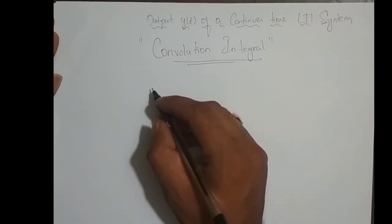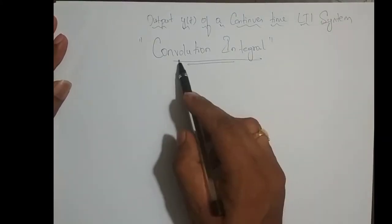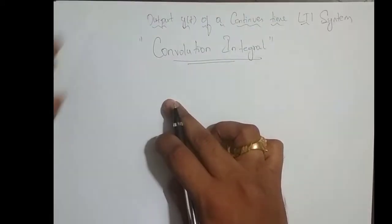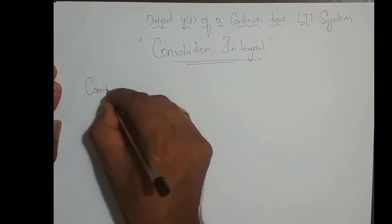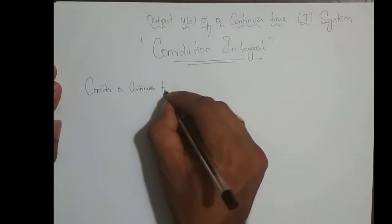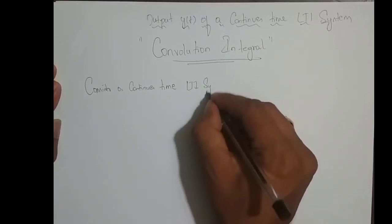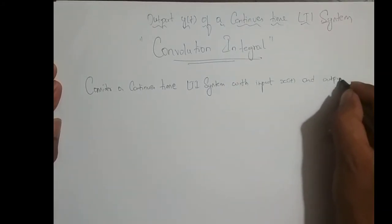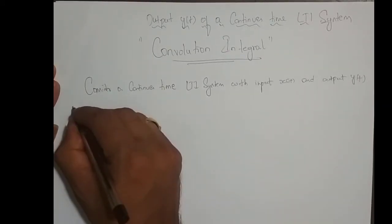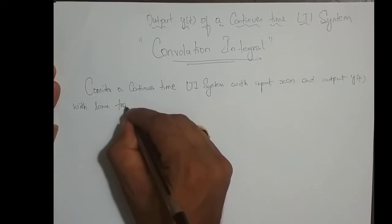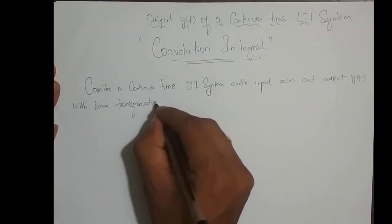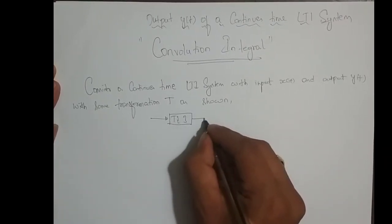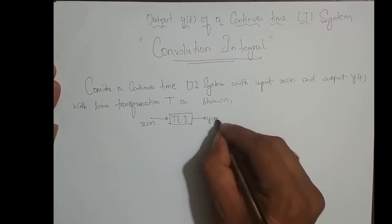In this video, we will derive the output of a continuous time LTI system, which we also call the convolution integral. The way we derive this is the same as what we derived for convolution sum. Consider a continuous time LTI system with input x and output y, with some transformation T. We have an LTI system which does some transformation T, where input to that system is x(t) and output is y(t).